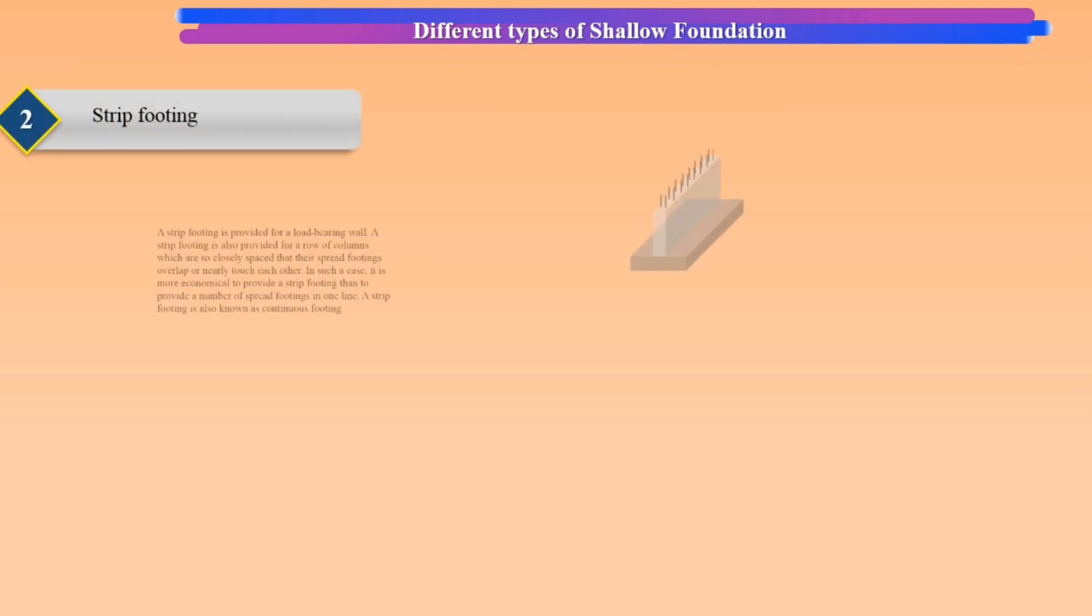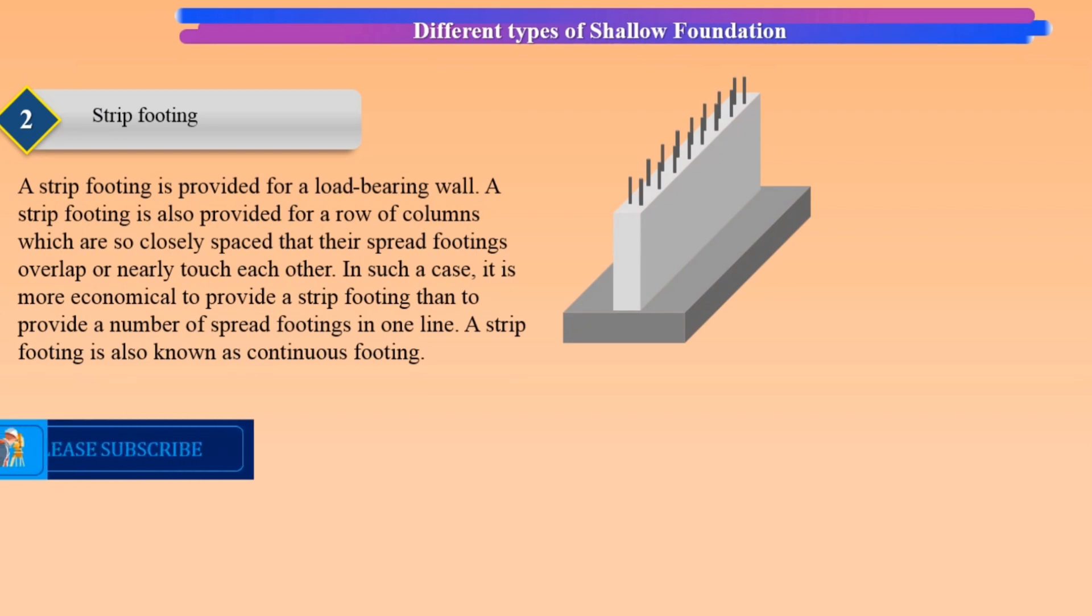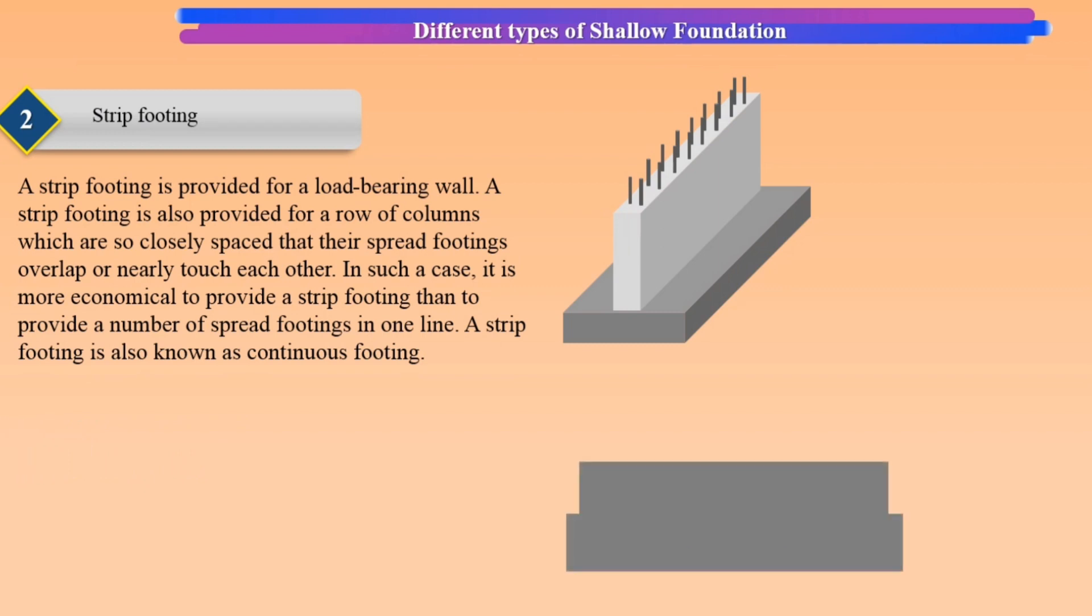Strip footing: A strip footing is provided for a load-bearing wall. A strip footing is also provided for a row of columns which are so closely spaced that their spread footings overlap or nearly touch each other.